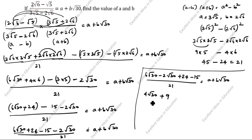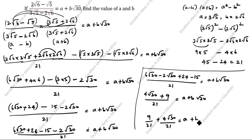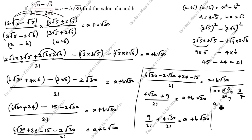Combining like terms: 6 root 30 minus 2 root 30 = 4 root 30, and 24 minus 15 = 9. So we have 9 plus 4 root 30, all divided by 21, equals a plus b root 30. Rewriting: 9/21 plus (4/21) root 30 equals a plus b root 30. Therefore a equals 9/21, which simplifies to 3/7. And b equals 4/21. So a = 3/7 and b = 4/21. Thanks for watching this video.